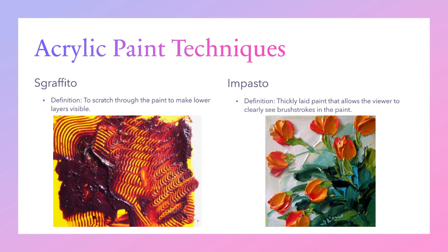Sgraffito is scratching through the paint to make lower layers visible. Impasto is thickly laid paint that allows the viewer to clearly see brush strokes and collections of paint — it feels almost three-dimensional.